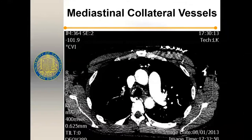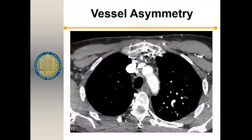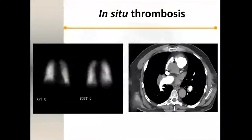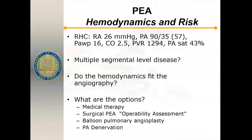Another giveaway for chronic thromboembolic disease is mediastinal collaterals — the body is trying to get blood flow into the lung, and you get prominent mediastinal collaterals around the airways. Vessel asymmetry is also a clue — clearly more vessels on one side than the other, suggesting proximal obstruction. In contrast, here's a case of in-situ thrombus: you can clearly see clots, but the VQ scan is completely normal. Taking this patient to the operating room would give them a sternotomy with potential complications but no benefit — this is in-situ thrombus in a patient with arterial pulmonary hypertension.